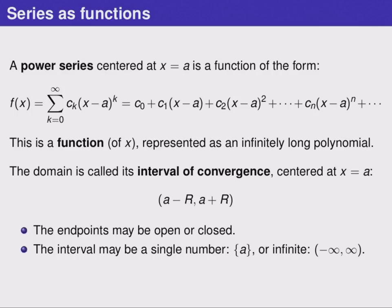Just like a Taylor series however, a power series has an interval of convergence. This is the domain of this function and it's important to think of it this way. The interval of convergence is the list of x values for which this function is defined, and just like a Taylor series it's centered at x equals a and it has a radius of convergence that we call R. This is an interval and the endpoints may be open or closed.